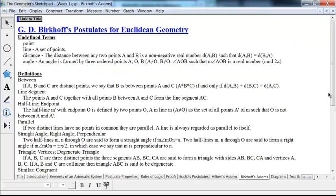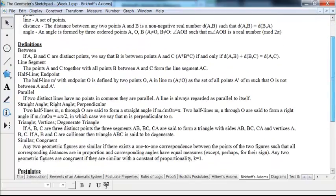Contrast that with this set of axioms by Birkhoff, and Birkhoff and Hilbert both from the 20th century. Birkhoff's postulates for Euclidean geometry are sometimes called postulates using compass and ruler because they deal with measurement. So, in this version, point, line, distance, and angle are undefined terms. Okay? But we have some definitions between this. Line segment, half line, parallel, straight angle, and so forth. Some of these things are actually defined. Okay?